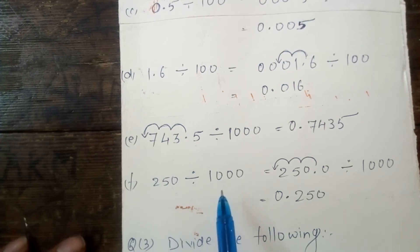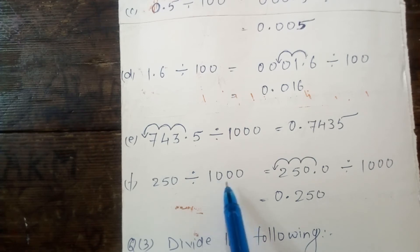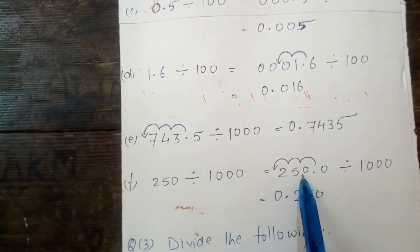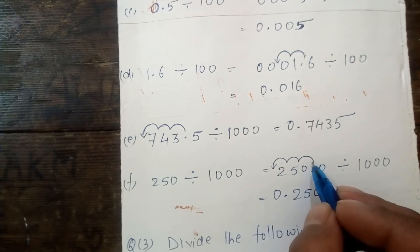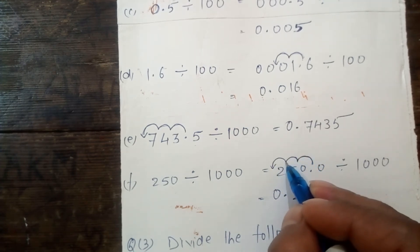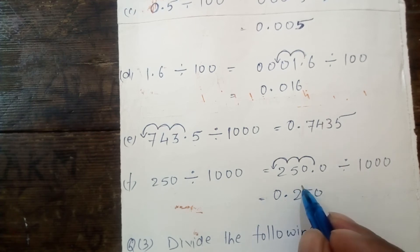Again, 250 divided by 1000. We will apply the same procedure. In 1000, the number of zeros is 3, so we move the decimal point 3 places to the left. We can write 250 as 250.0. This is the decimal point, and we move it 3 places to the left: first place, second place, and third place. So your answer will be 0.250. 0.250 is your required answer.